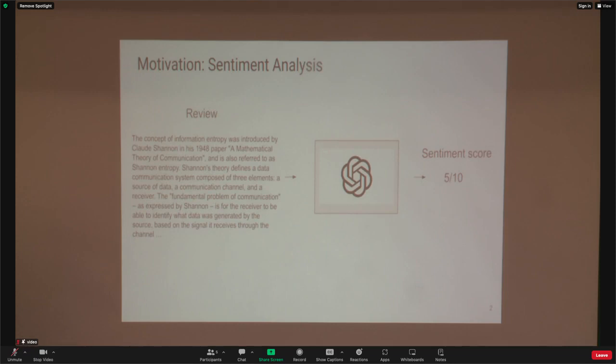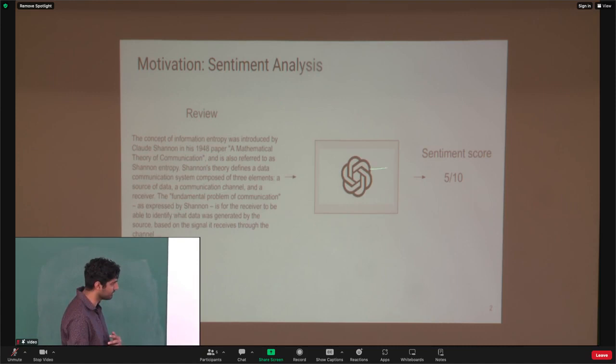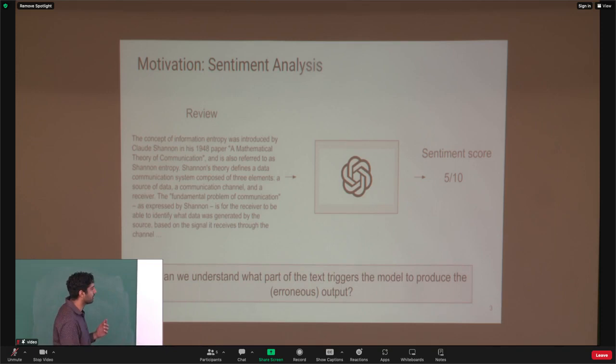So this is the motivation behind this talk. We have a review — in this case a review of Shannon's Mathematical Theory of Communication — and we pass that through some language model designed to tell us the sentiment of this review, whether it was a positive or negative review. Obviously there's something wrong with this language model because there are no negative reviews of this paper, so something is going on here. The question is: can we understand what parts of this text are triggering this language model to give this erroneous score?